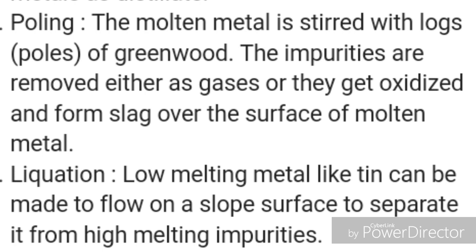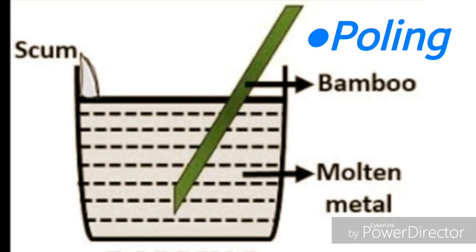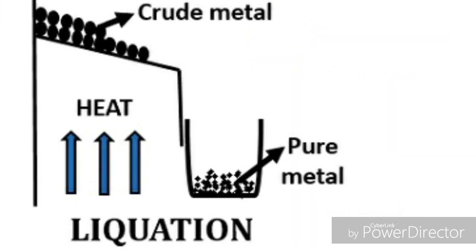The third method is liquation: low melting metals like tin can be made to flow on a sloped surface to separate them from high melting impurities. In this picture you can see how the poling process is done — a log of bamboo wood is used. In liquation, crude metal is placed on the sloped surface, heat is supplied, and pure metal is collected in a container below.